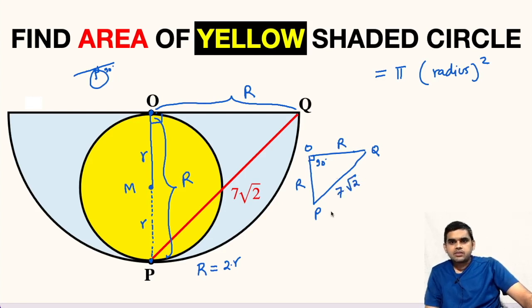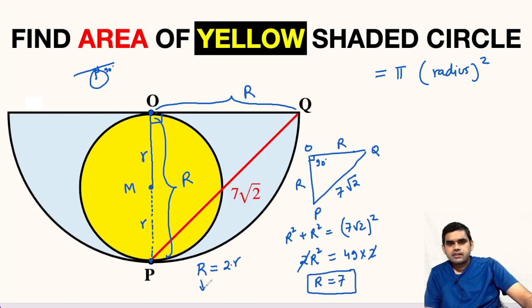We will apply Pythagorean theorem here. R square plus R square will be 7 root 2 whole square. 2R square will be 49 times 2. We can divide both sides by 2. R will be square root of 49 that is 7 units.